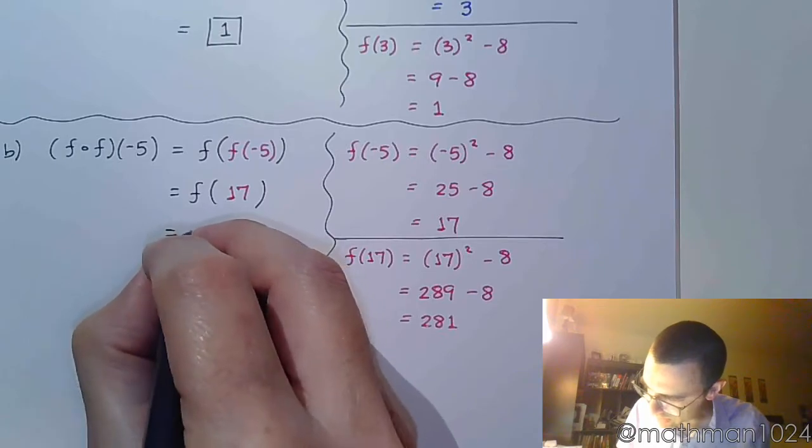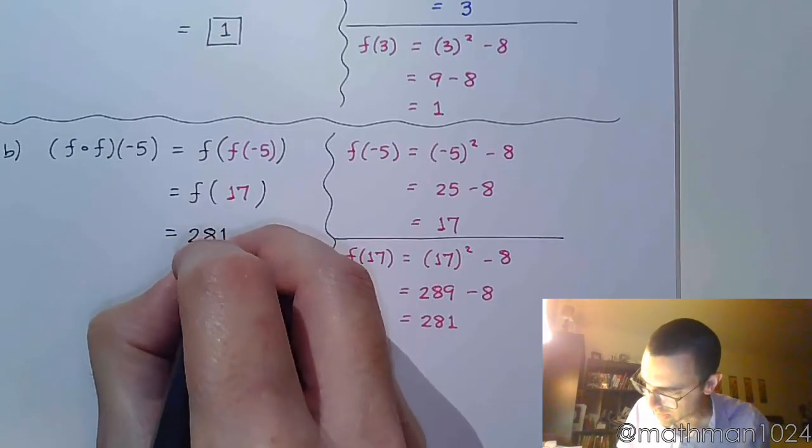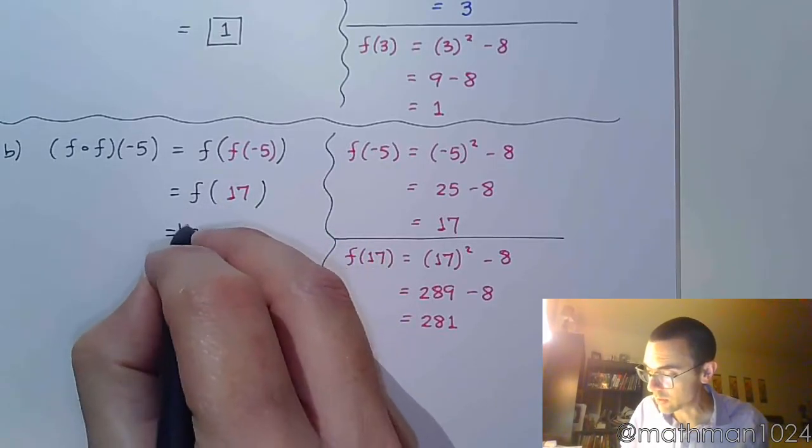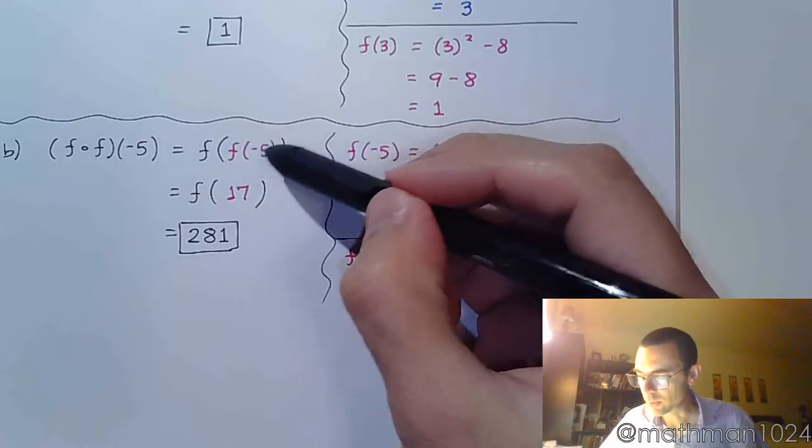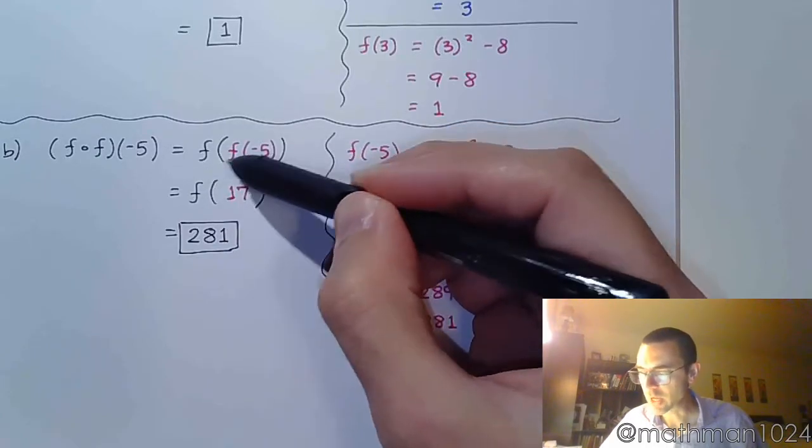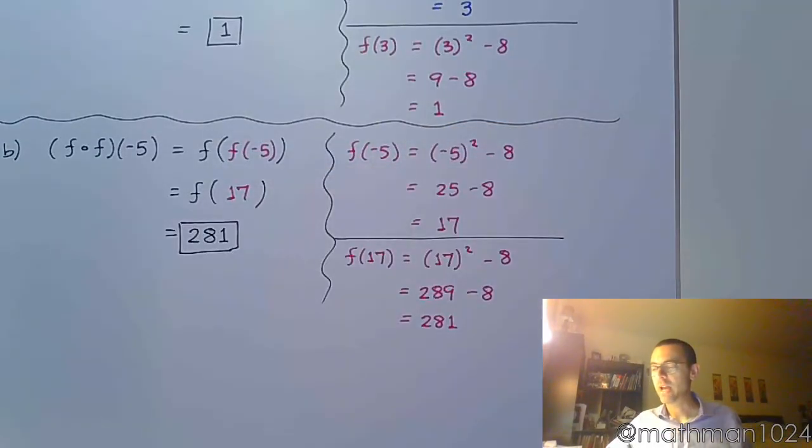So f of 17 is 281. I guess even better, what we're trying to say here is that f of f of negative 5 is 281. It almost kind of connects to these recursive definitions, where you have to do something first to plug it back in. You do something here, you kind of plug it back in. And I could keep plugging it back into f, and it's going to take a particular pattern. But anyway, that's for something else.